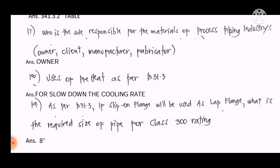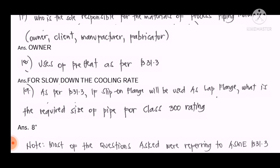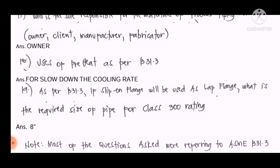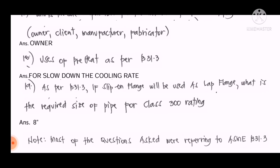Question number eighteen: What is the use of preheat as per ASME B31.3? The answer is to slow down the cooling rate. Question number nineteen: As per B31.3, if a slip-on flange is used as a lap flange, what is the required pipe size for class 300 rating? The answer is 8 inch.